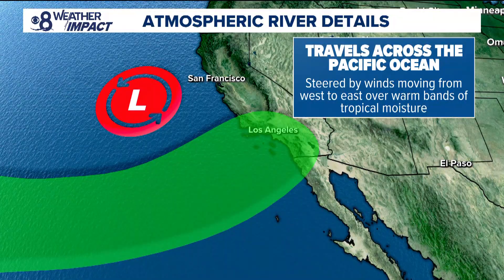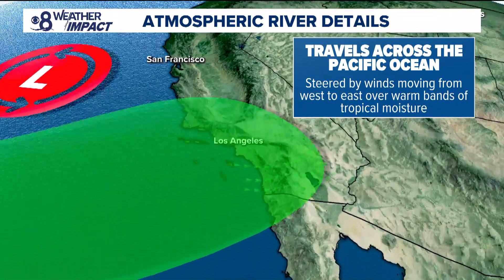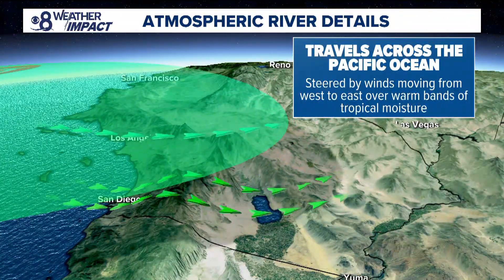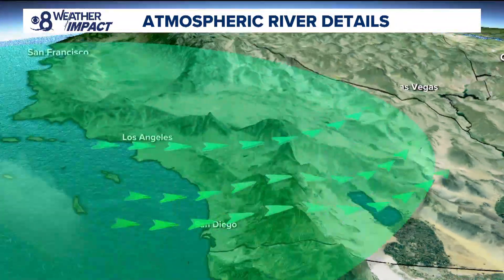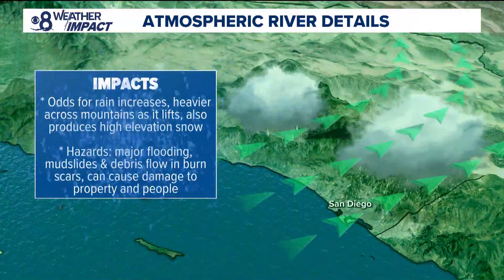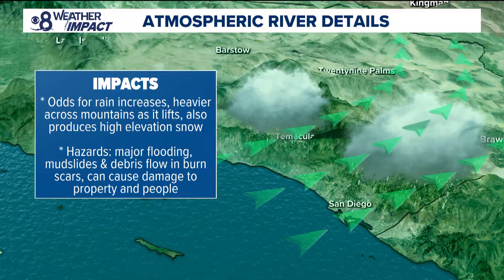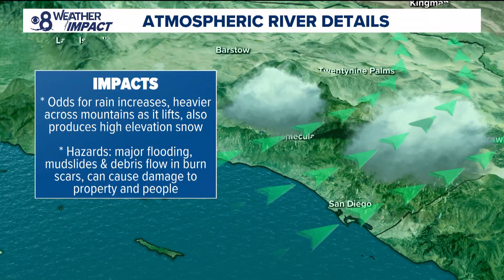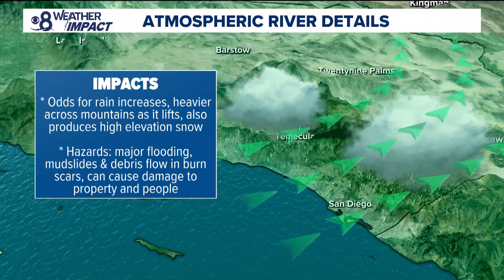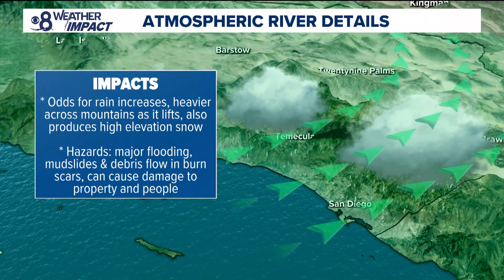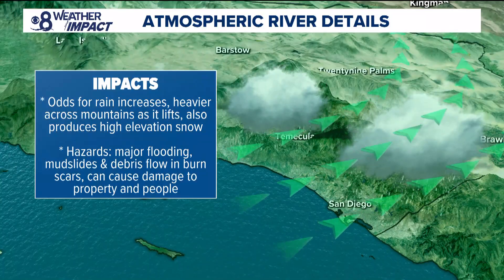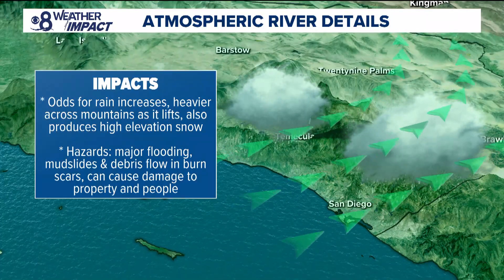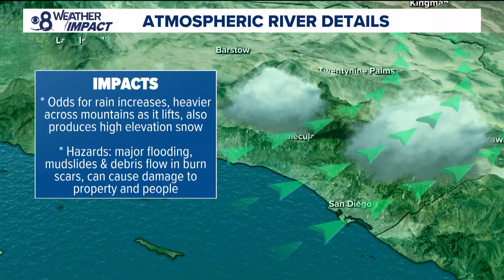These warm bands of tropical moisture are tapped into by an area of low pressure, which sends them in our direction. The odds of rain chances go up significantly when we have atmospheric river events because they have so much moisture associated with them. Rainfall is also heavier across the mountains as the moisture lifts.